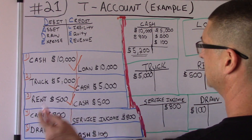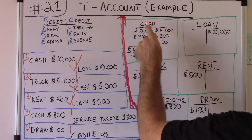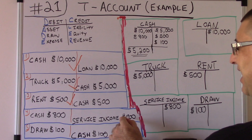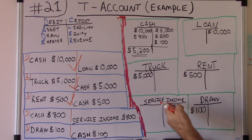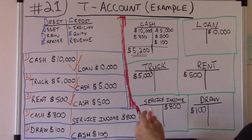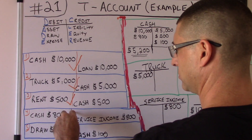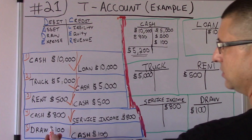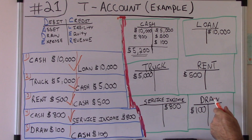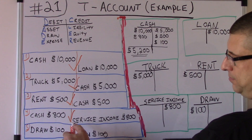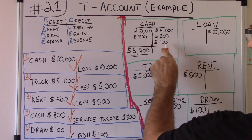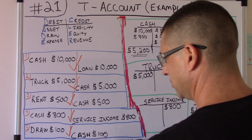Fourth journal entry: cash debit 800 — we go to the cash account, debit 800. The credit is service income 800 — we go to the service income account and credit 800. Fourth journal entry done. Fifth journal entry: debit draw 100 — we go to the draw account, debit 100. The credit is cash 100 — we go to the cash account and credit 100. The fifth journal entry is done.